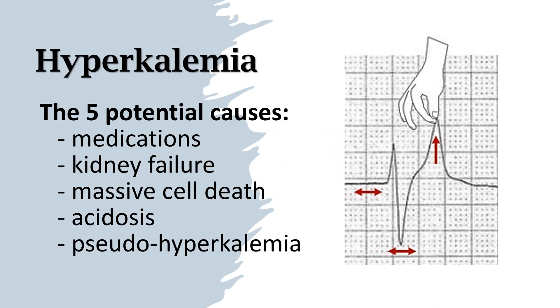ECG changes of hyperkalemia include peaked T waves, P wave widening or flattening, PR prolongation, severe bradycardia, and high-grade AV block.